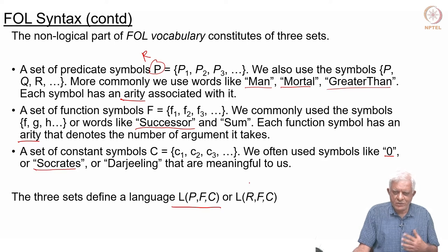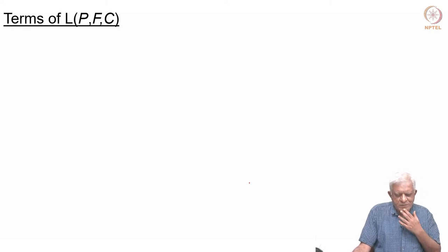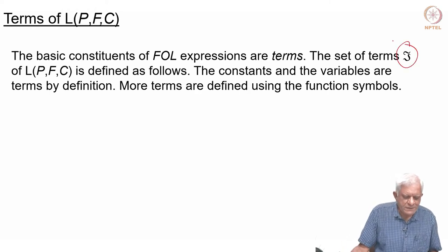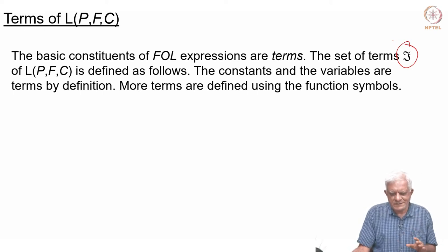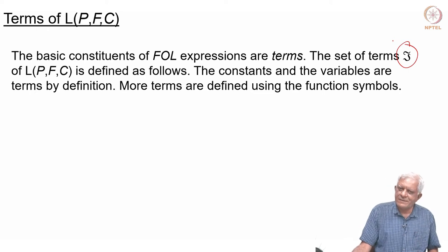Now, to talk about how we build sentences using this vocabulary — before we build sentences we build something called terms. The basic constituents of FOL expressions are terms. The set of terms of this language is defined as follows: first of all, the constants and the variables are terms. This gives us a hint that terms are talking about individuals — constants are individuals that are known, variables are individuals that are not known, but basically they will refer to some element in the domain.